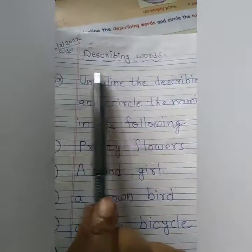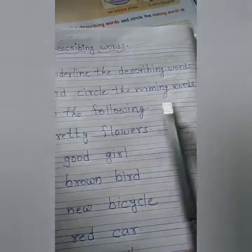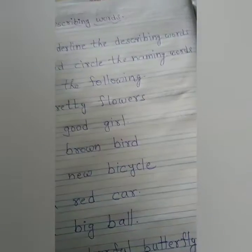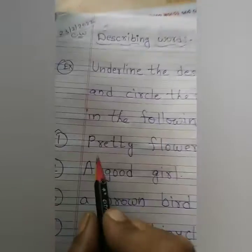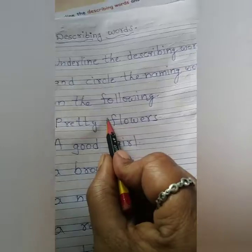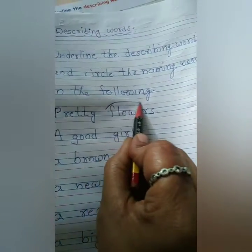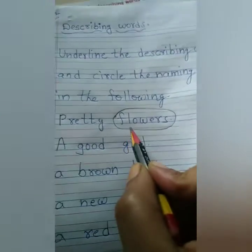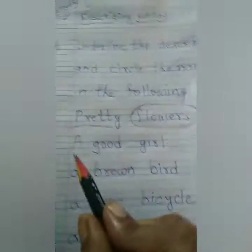More examples here: underline the describing word and circle the naming words in the following. Pretty flowers — we are talking about flowers, so the naming word is flowers. We will circle 'flowers' and underline 'pretty'.